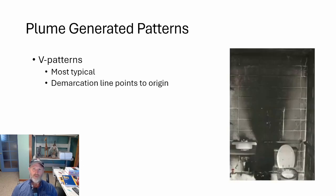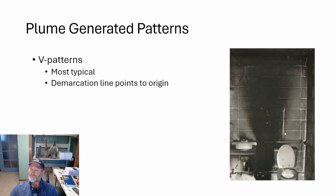There are a few different types of plume generated patterns. The most typical is the V pattern. Picture a trash can fire — a small incipient fire about the size of a trash can. Incipient means you can still approach it without being overcome by smoke. A trash can fire next to a wall is going to leave a V pattern, and that V pattern points to an origin. It's a very useful tool for identifying where a fire, or at least a subsequent fire, was located.